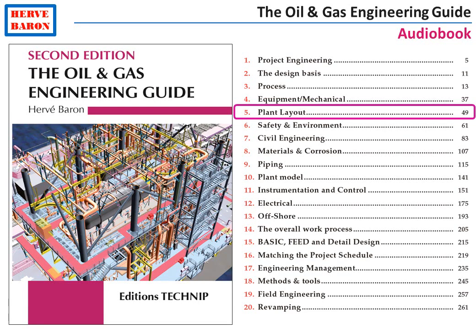Welcome to Chapter 5 of the Oil and Gas Engineering audiobook. Now that we have defined the process equipment, we shall define the way they are arranged in the plant. This is the purpose of the plant layout. Plant layout is sometimes included under the piping discipline even though it has a very distinctive role — it defines the overall layout of the facility as well as the position of each equipment within units.